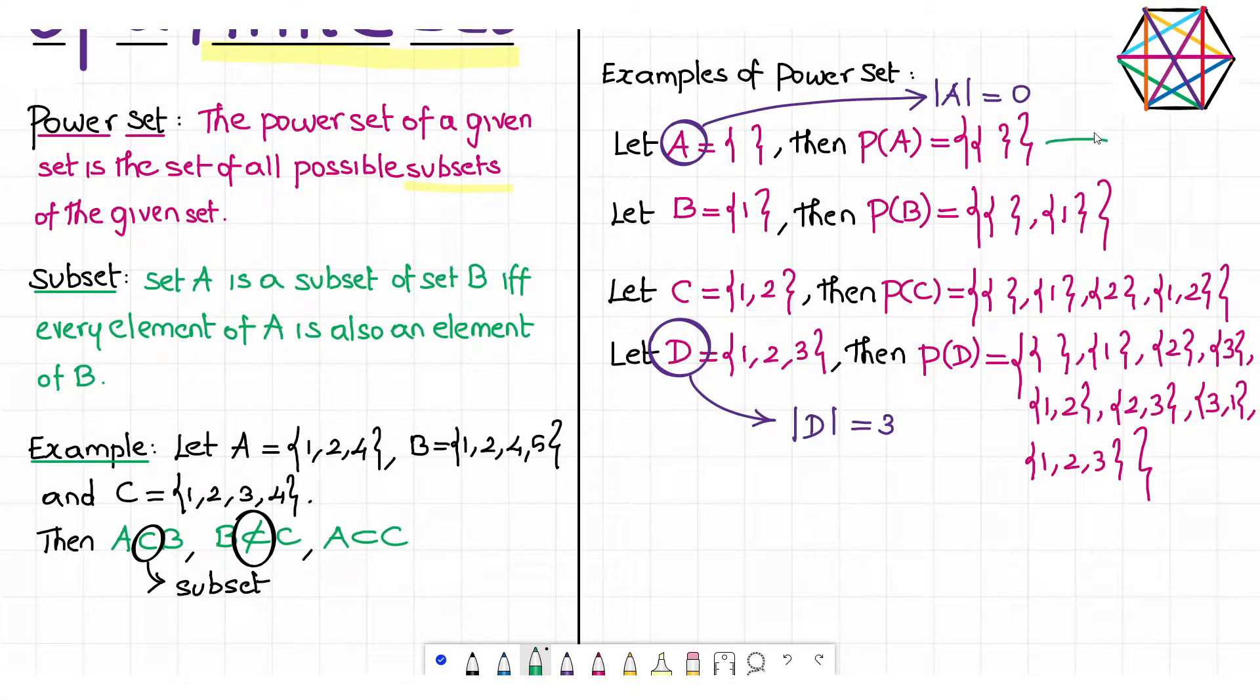Now we see a very obvious pattern in the cardinality of power sets. The first power set has 1 element. The second power set has 2 elements. The third power set has 4 elements. And this fourth power set has 8 elements. If our observation is right, a set with 4 elements will have 2 power 4 elements in its power set. A set with 9 elements will have 2 power 9 elements in its power set.